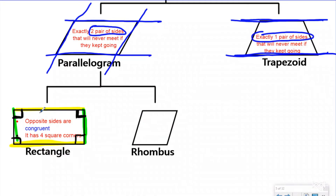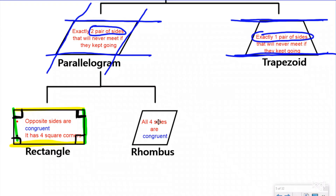The rhombus is different from the rectangle because it has no square corners — you couldn't fit a square perfectly into any of them. What makes a rhombus a rhombus is that all four sides are congruent — each side is the exact same length as all the other sides. You can't be called a rhombus unless you have all four sides that are congruent.